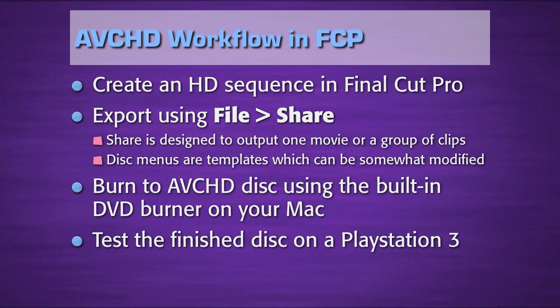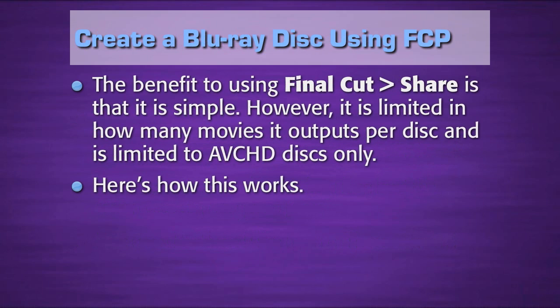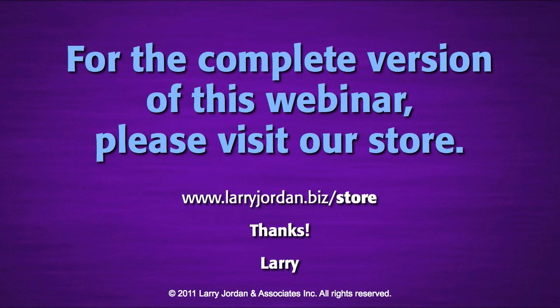Let's start first with Final Cut. The workflow for creating an AVCHD disc in Final Cut is to create an HD sequence, then export using File > Share. Share is a new feature inside Final Cut Pro 7, designed to output one movie or a group of clips. The disc menus it creates are templates which can be somewhat modified, but not extensively. We burn to an AVCHD disc using the built-in DVD burner on your Mac, then test the finished disc on a PlayStation 3. The benefit to using Final Cut Share is that it's simple. However, it's limited in how many movies it outputs per disc and is limited to creating AVCHD discs only.